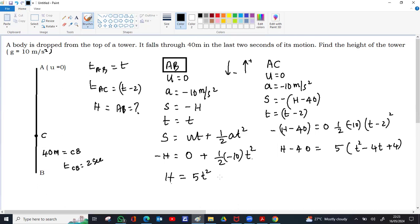This H can be substituted here, so 5t² minus 40 equal to 5t² minus 20t plus 20. So 5t² will go, 20 will come left side, so minus 60 equal to minus 20t, or t is equal to 60 by 20, 3 seconds.